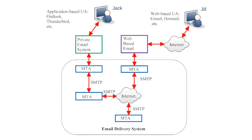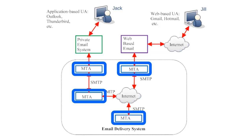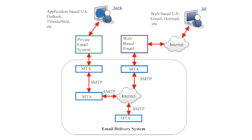So Jack writes an email and sends it off through the internet. Jack's email must travel from his private email system through a series of servers called Message Transfer Agents, or MTAs, before it can reach its destination. Jack composes his message in his user agent, and when he hits send, the user agent sends the email to the first Message Transfer Agent. That MTA sends the email to another MTA, which sends it through the internet to a third Message Transfer Agent.